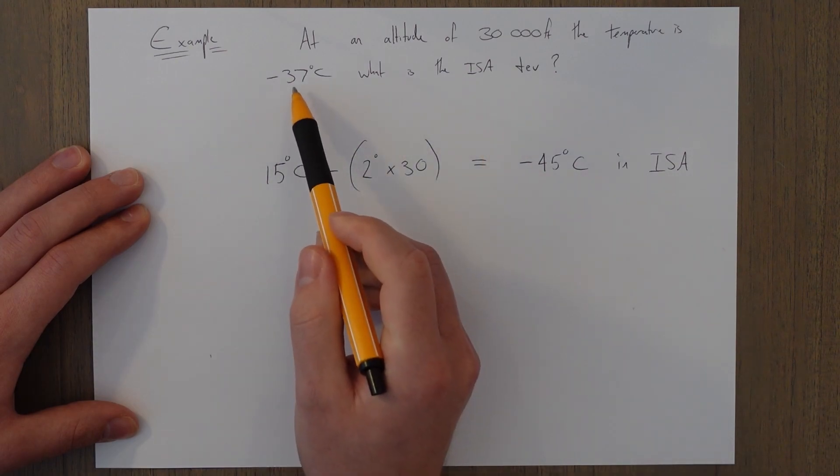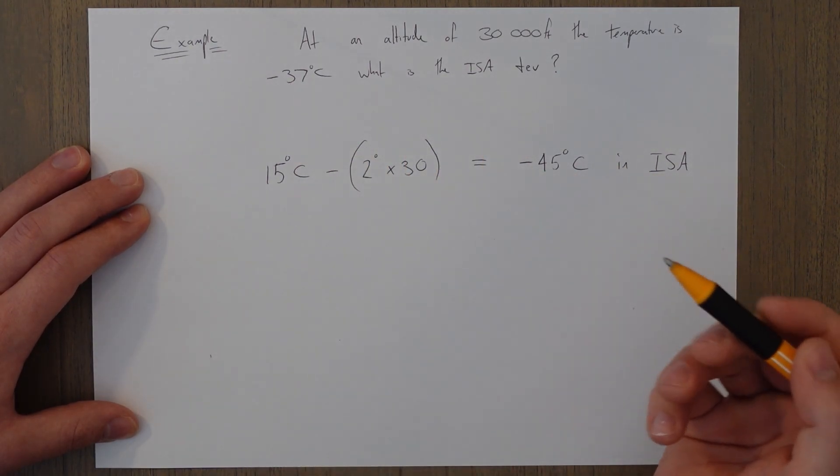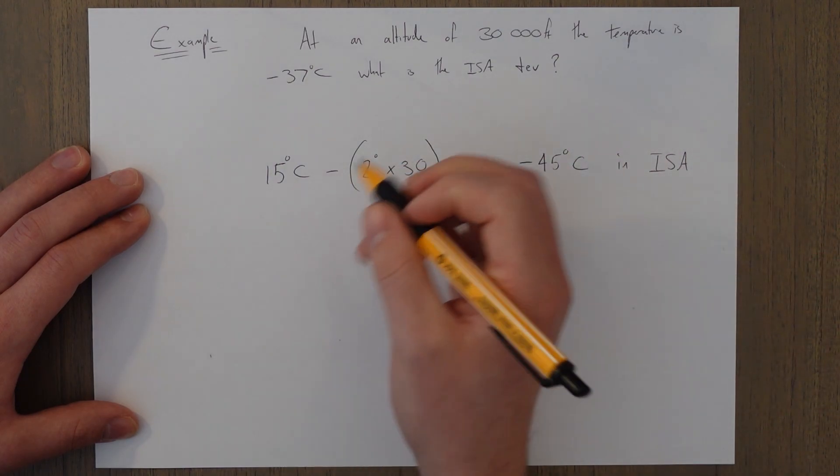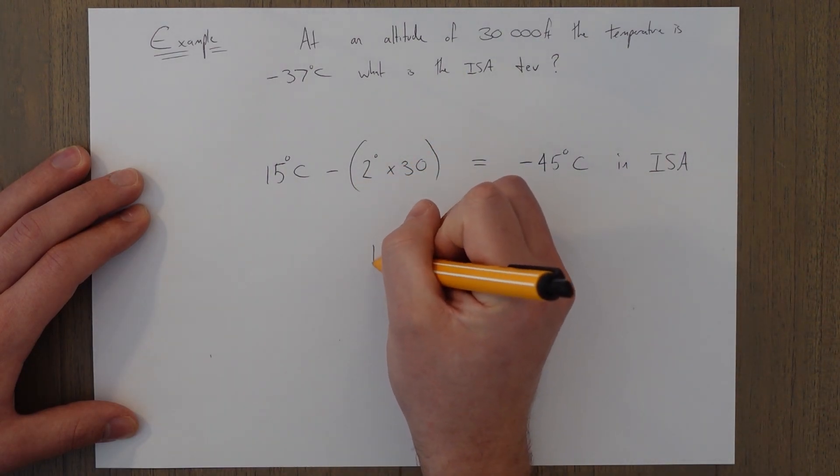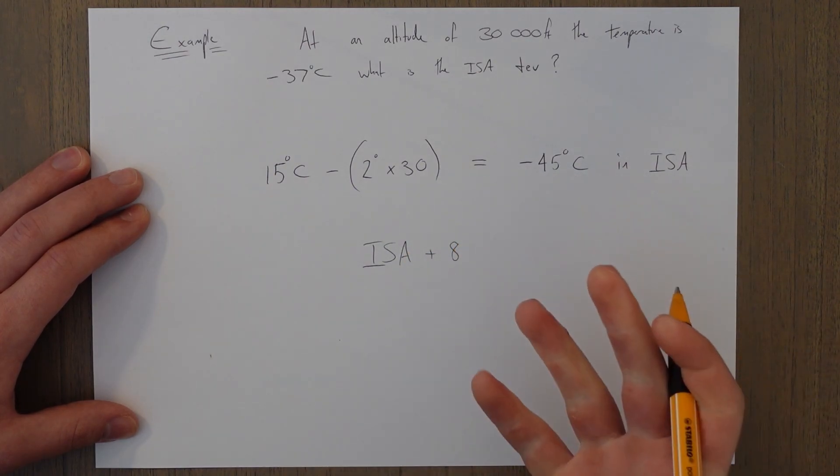That's not the case today—today it's minus 37, so it's actually warmer by 8 degrees. So we can say that the temperature is ISA plus 8. Nice and easy.